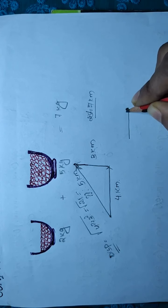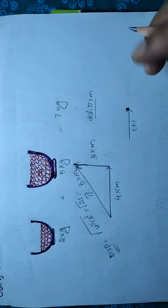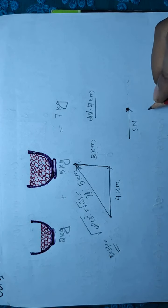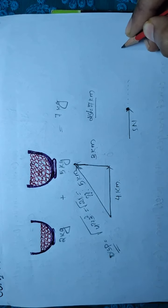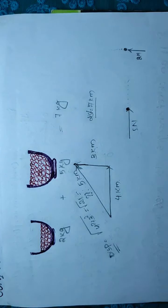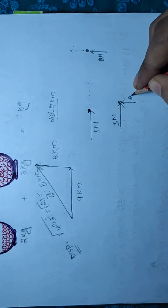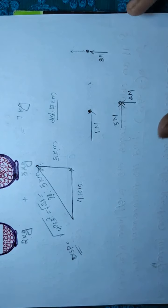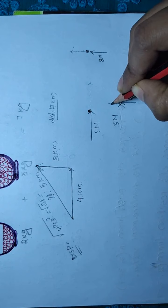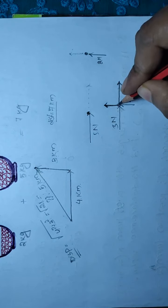Suppose a 5 Newton force and a 2 Newton force act on an object in a certain direction. If both forces act in the same direction, the object moves in that direction. But if one is 5 Newton and the other 2 Newton acting in different directions, the object will not simply move in one direction.